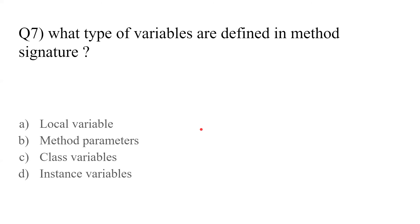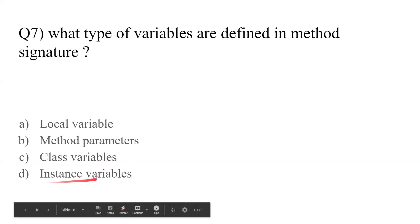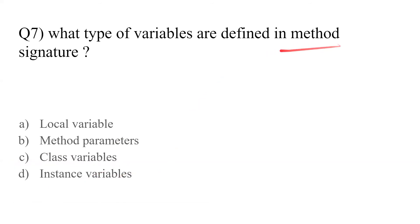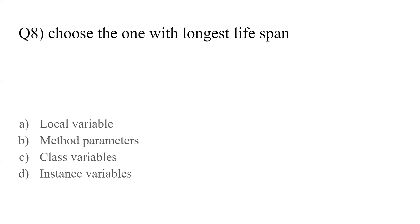Question number six: what type of variables are defined in the method signature? Options are local variables, method parameters, class variables, or instance variables. We are talking about method signature, so the answer is option B — method parameters are defined inside the method signature.